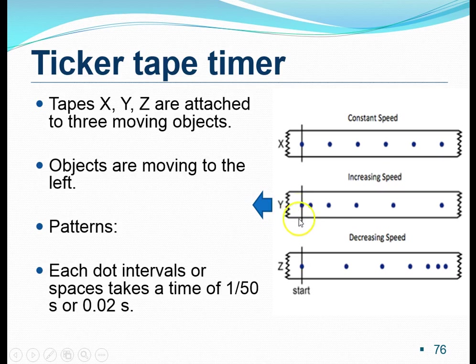For Y itself, if the dots are seen to make such a pattern with increasing distance between them, then we can conclude that the speed of the trolley is actually increasing. For Z itself, if we see that the distance between the dots is actually decreasing, this tells us that the speed of the trolley is actually decreasing.